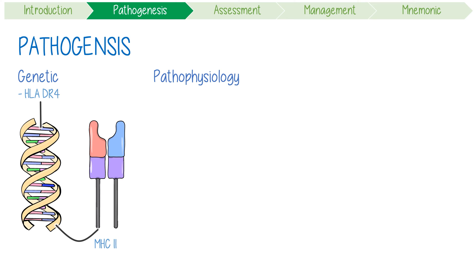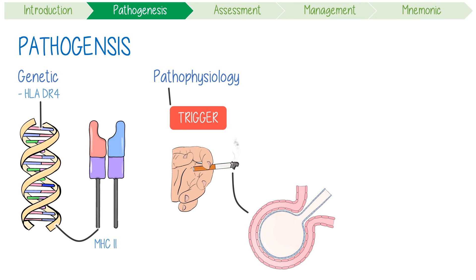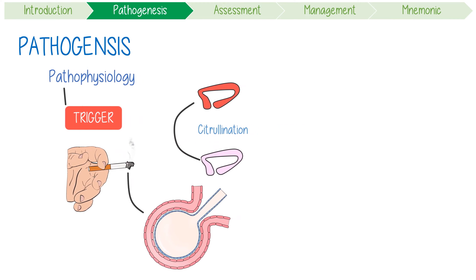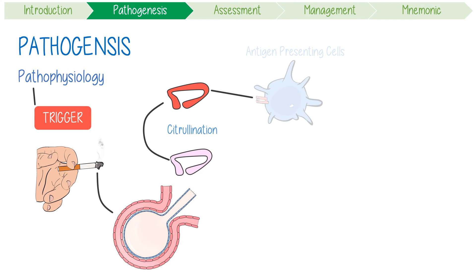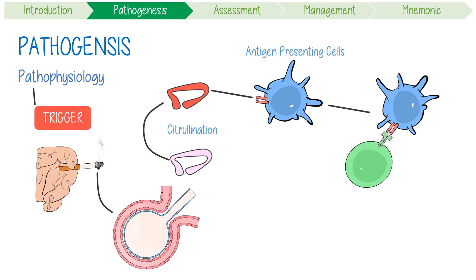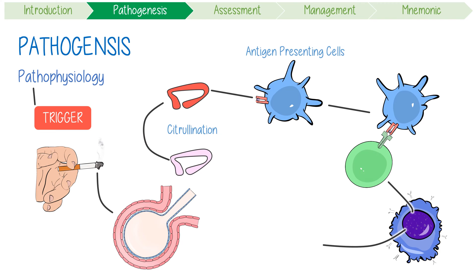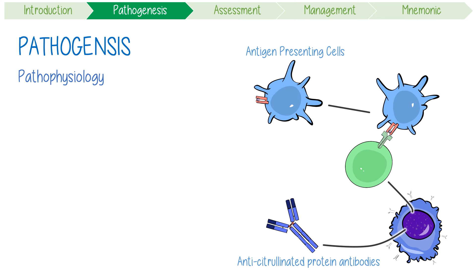Pathophysiologically, it probably starts with a trigger at mucosal surfaces, such as cigarette smoke irritating the lungs. This can result in peptide residues getting converted from arginine into citrullinine. These modified proteins are then picked up by antigen-presenting cells and shown to overzealous lymphocytes,